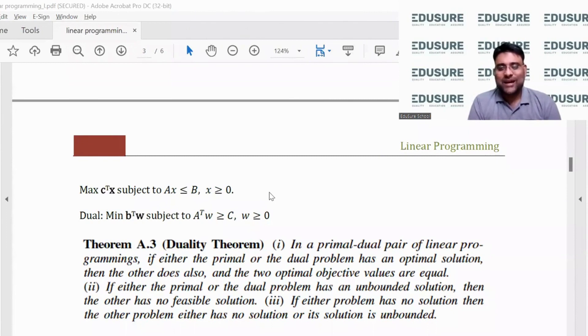So if it is unbounded, the other will be no feasible. If either problem has no solution, then the other either has no solution or it is unbounded. These are the relationships between the primal and the dual.